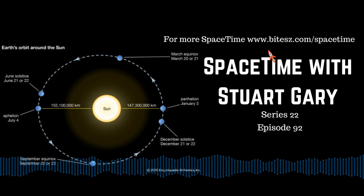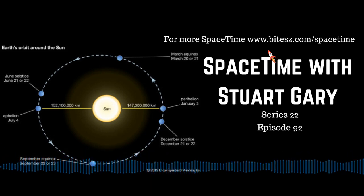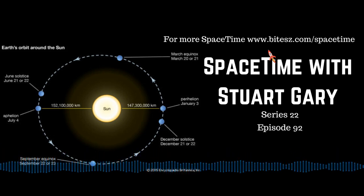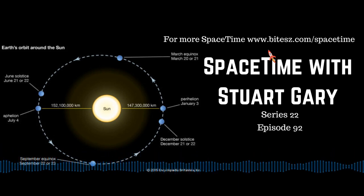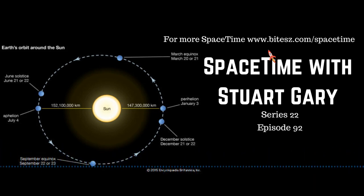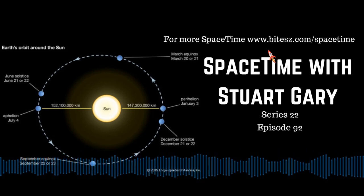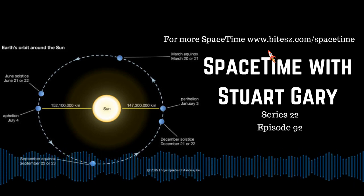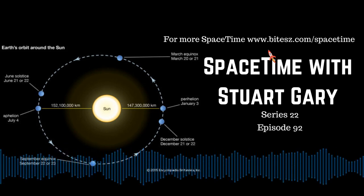On the day of the December solstice, Earth's south pole is tilted towards the sun. The sun will rise south of east and set south of west, reaching its most southerly declination of 23.4 degrees. The seasons are governed by the tilt of Earth's axis as it journeys around the sun. Temperatures aren't determined by Earth's orbital distance from the sun, but rather the angle of the sun's rays striking the Earth. A lot of people confuse the summer solstice with perihelion — Earth's closest orbital position to the sun — which occurs about two weeks after the December solstice.